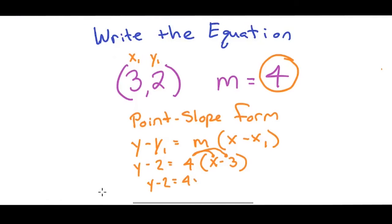4X minus 10. And that's how you write an equation when you are given a point and a slope.